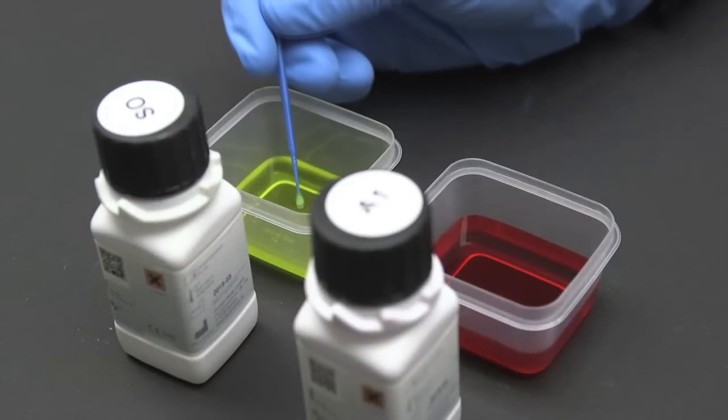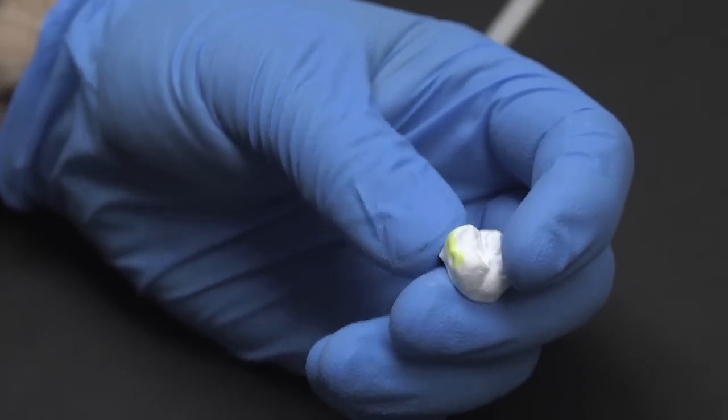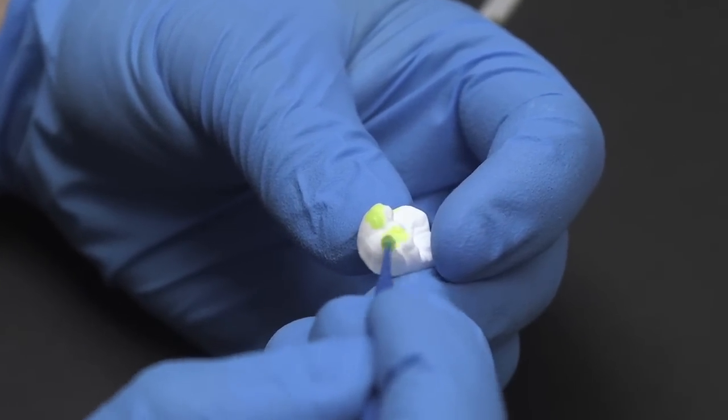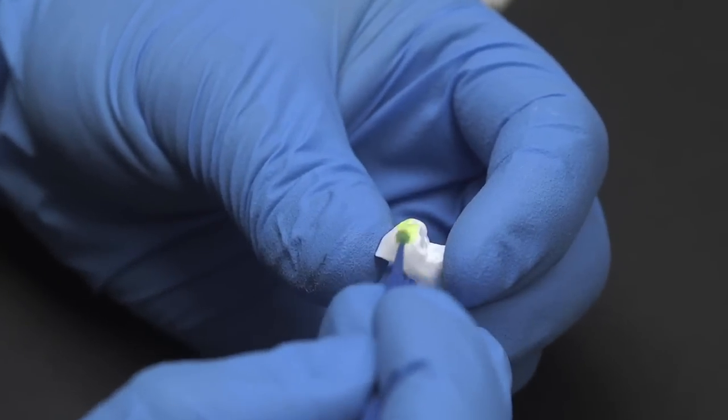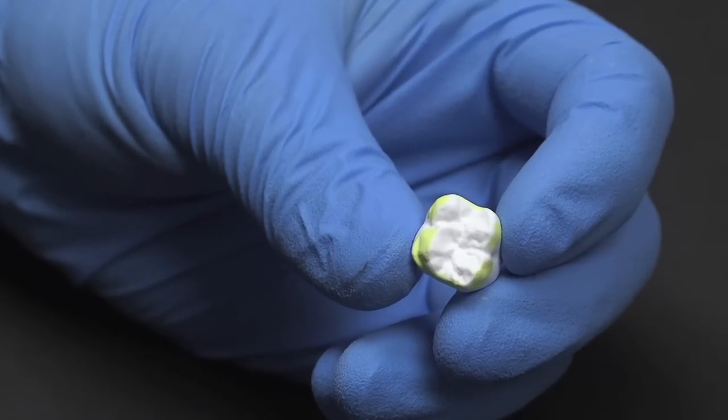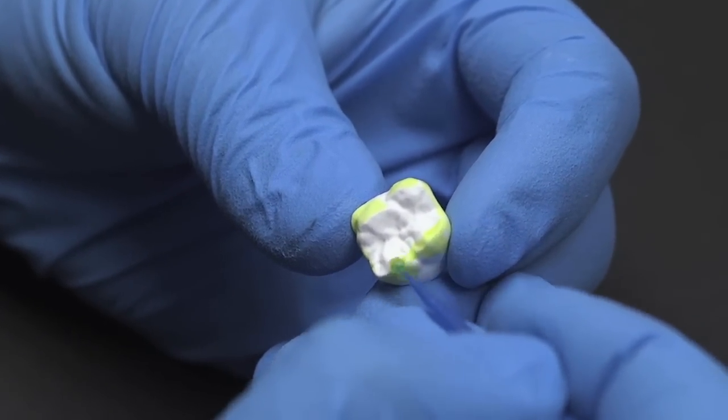You first want to apply the incisal liquid to any areas where less Denton color saturation is desired. When processing a posterior crown or bridge, paint the cusp tip with the incisal liquid. When painting the incisal liquid on an anterior crown, apply to both the facial and lingual incisal areas.